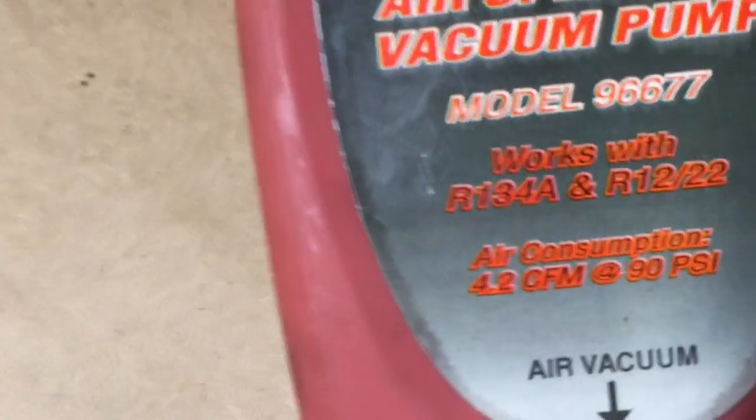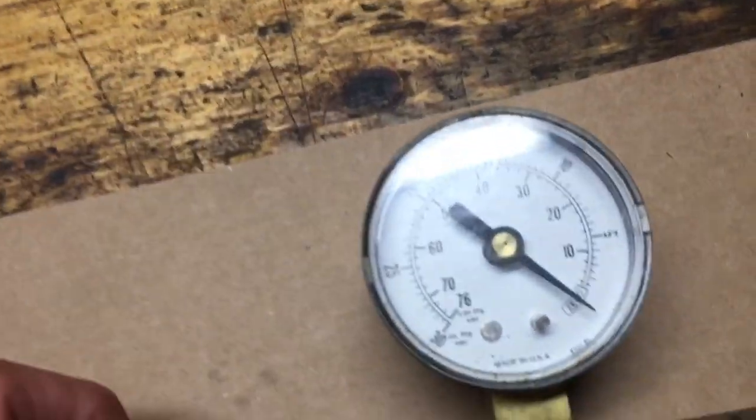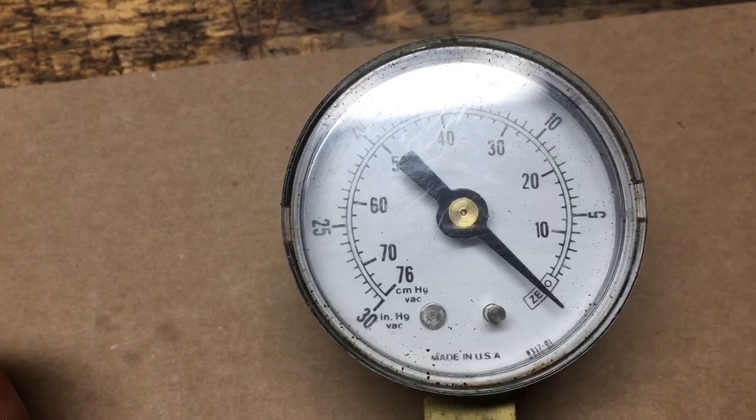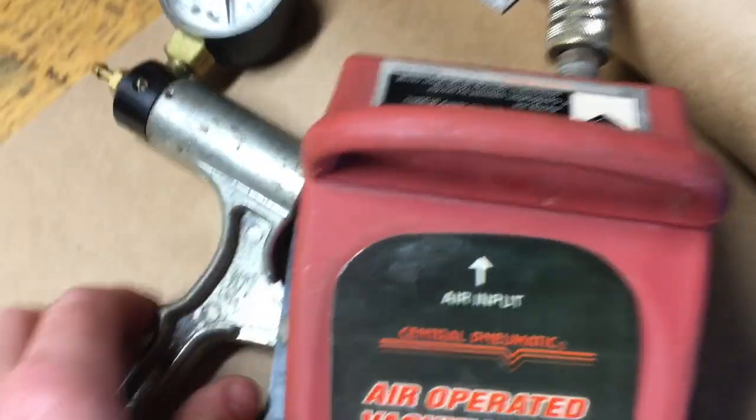So if you have got a pretty sizable compressor, compressor that can keep up with that kind of demand, you could have easily 15, 20 inches of mercury all day long. Right? So how does it work?